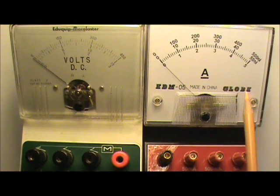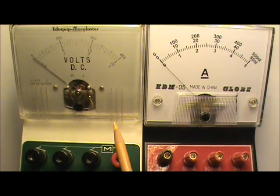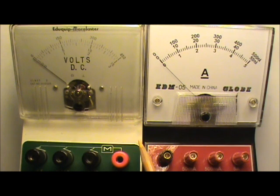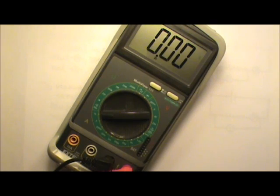Here I have a pair of classic ammeter and voltmeter. They are actually made of the same basic parts. And we will go into a little more detail in the next unit. Of course, we can also use these digital multimeters. You can change the dial and use it as an ammeter or a voltmeter.